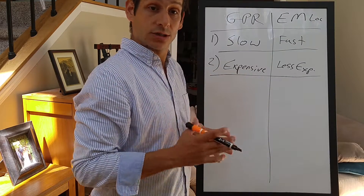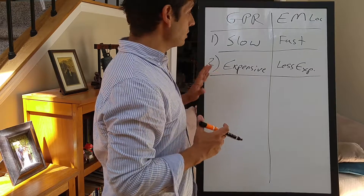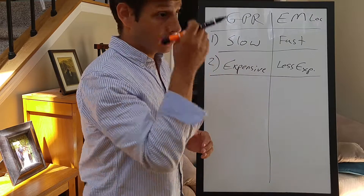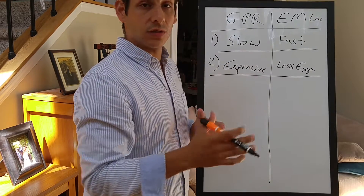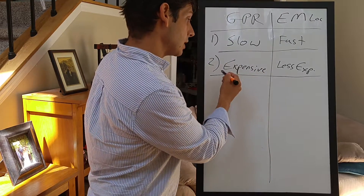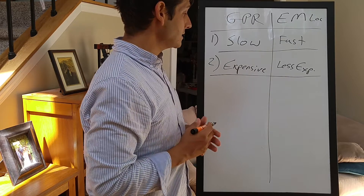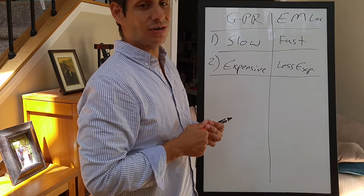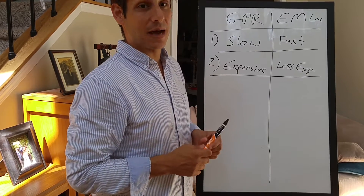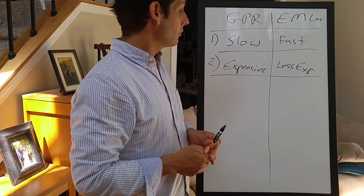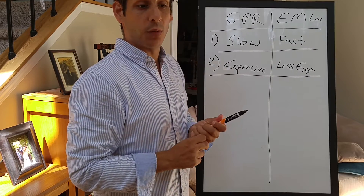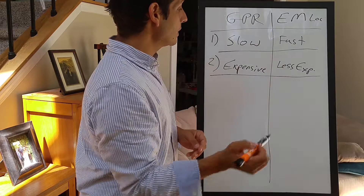Some folks don't use GPR yet for utility locating, and part of that issue might be the price. Prices have been coming down — where they were in the $20,000 to $30,000 range, now more simplified units are being produced at around $12,000. Someone even built a GPR in his garage and is selling them for $5,000. The point is they're coming down in price, and sooner or later the pricing structure will get to the point where people won't have excuses not to use GPR.